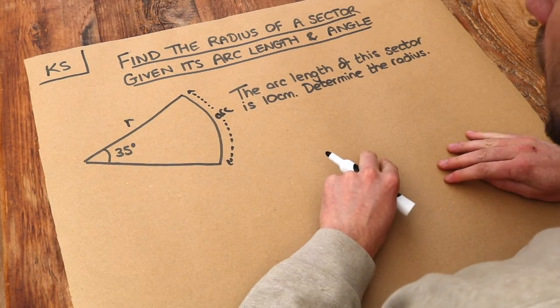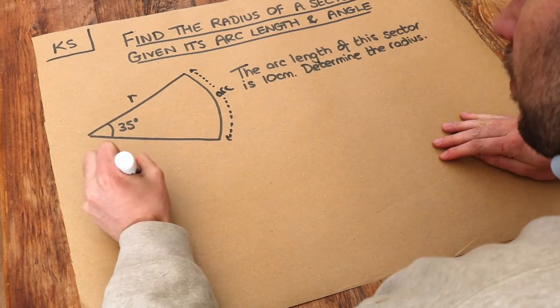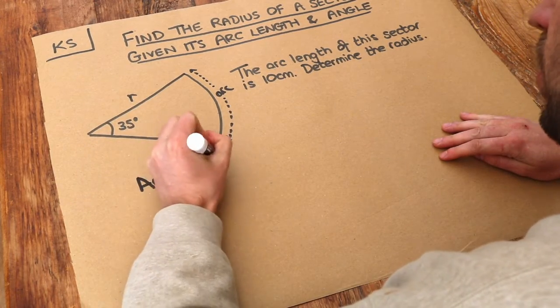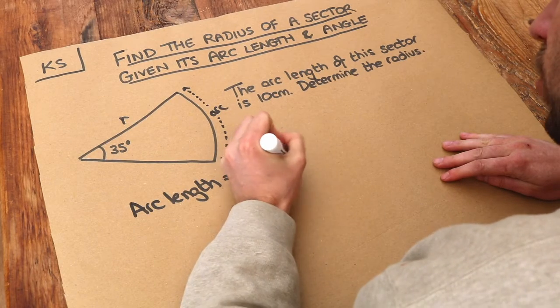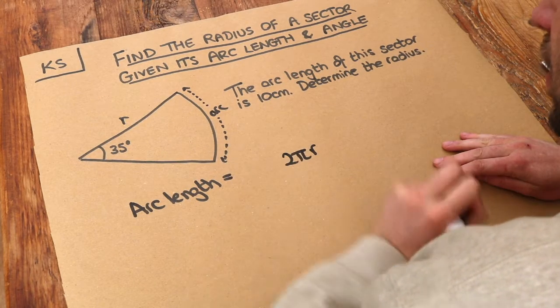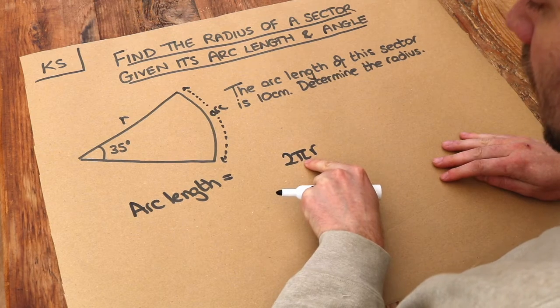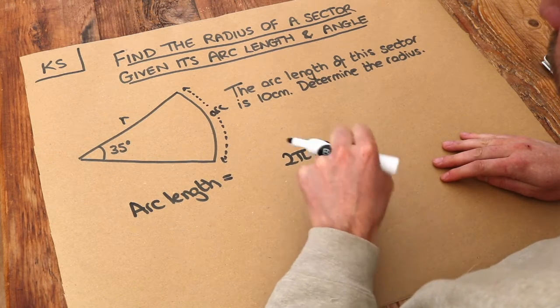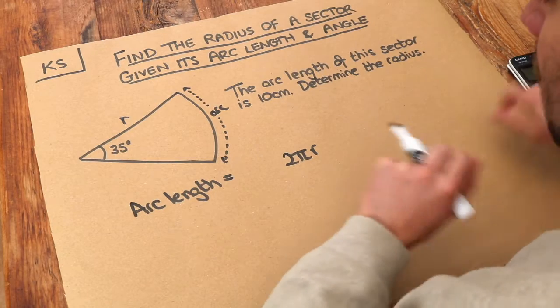Remember that the formula for the length of an arc is this: arc length equals - we start with the circumference of a full circle. The full length of the circle, 2πr, is the circumference where r is the radius. Remember, π is just a special number in maths meaning 3.1415 etc., but we've got it on our calculator so we don't have to remember it.